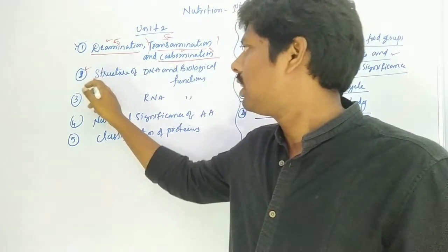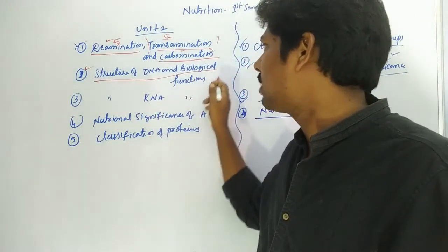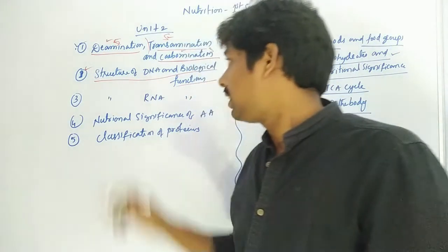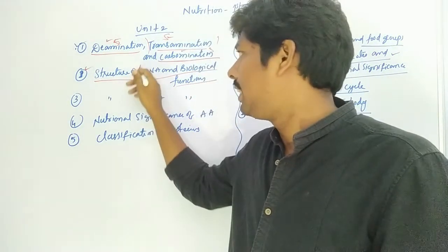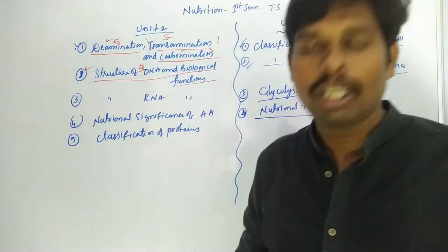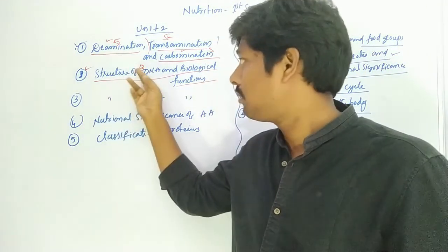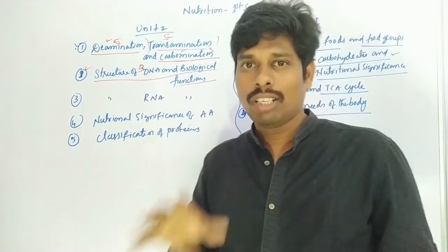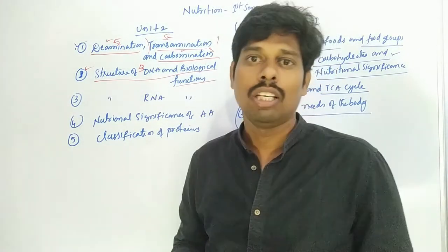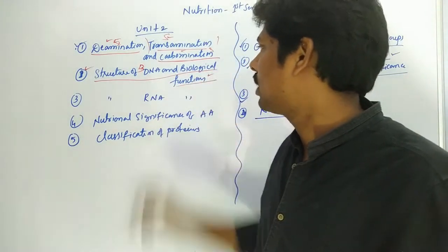Second important question is the structure of DNA and its biological function — very, very important. Structure of DNA, especially B-DNA. DNA types include A-DNA, B-DNA, and Z-DNA, with B-DNA structure being especially important. That is a biological sequence and the second important question.